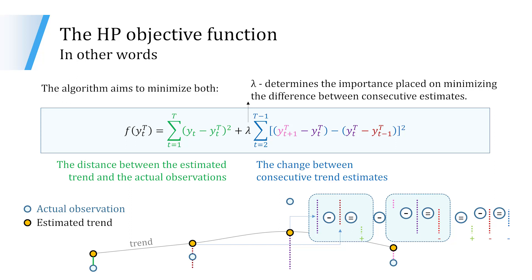The algorithm aims to minimize two parts of this equation. The part in green is the distance between the estimated trend and the actual observations. The part in blue shows the minimization problem of the change between consecutive trend estimates. And lambda, shown in black, determines the importance placed on minimizing the difference between consecutive estimates. Below the formula, we can see a figure that shows us visually how the minimization problem comprised within the square brackets functions.